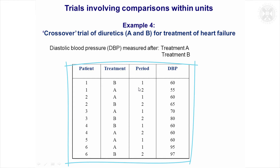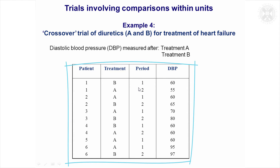In this study, two treatments were given to all patients but in different orders. The objective was to lower blood pressure, so the outcome here is diastolic blood pressure. This is just a list of the observed diastolic blood pressure values. The main thing you'll notice is that patient five dropped out of the study after period one, so we don't have an observation on treatment B.